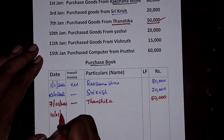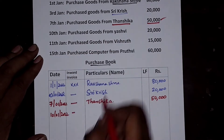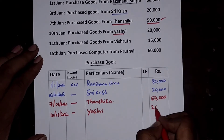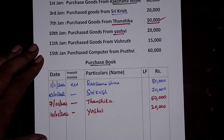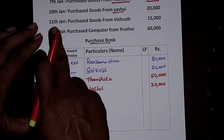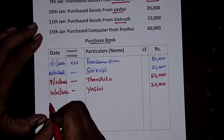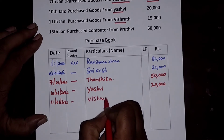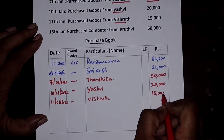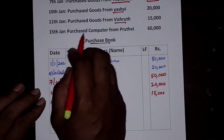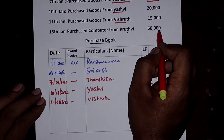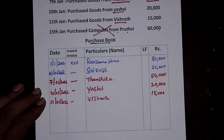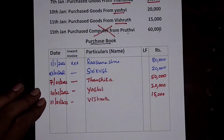On 10th January 2022, purchased goods from Yashvi for Rs. 20,000. On 11th January 2022, purchased goods from Prithvi for Rs. 15,000. On 15th January, purchased a computer from Prithvi for Rs. 60,000. Purchase of a computer is not goods — it is an asset — therefore we have to ignore the purchase of computer.